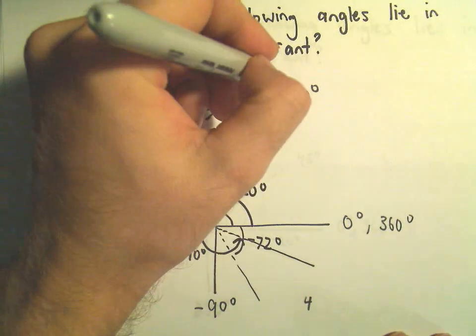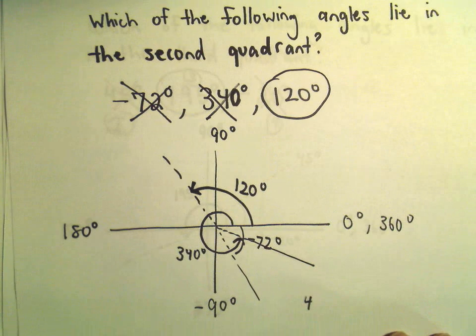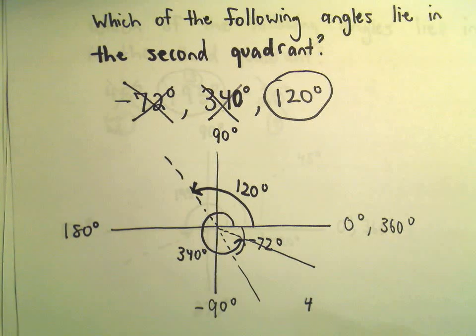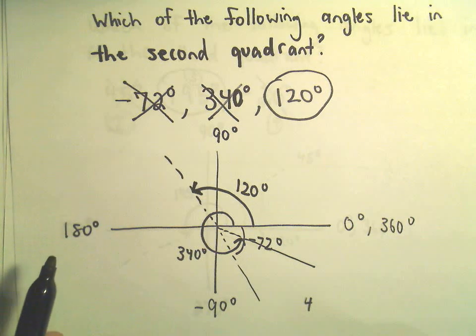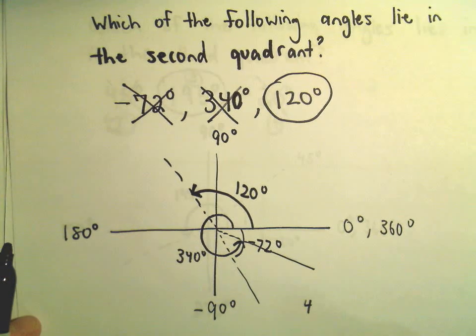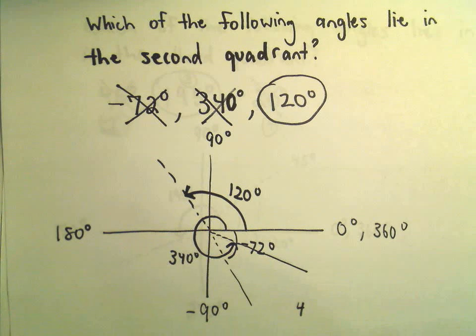So it looks like 120 degrees is going to be our answer choice in this case. Finding the quadrant in which angles lie is very common — you've got to be able to do this all the time. Certainly one of these things you want to get under your belt.